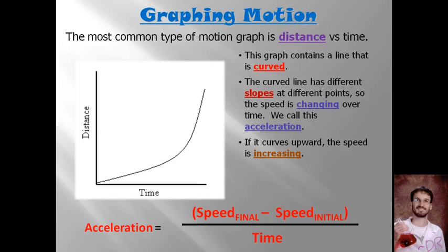The formula for acceleration is acceleration equals speed final, which means the speed that the object is going when you're done taking your data, minus speed initial, which would mean the speed the object was going when you started taking your data, divided by the time that spanned while you were taking your data.